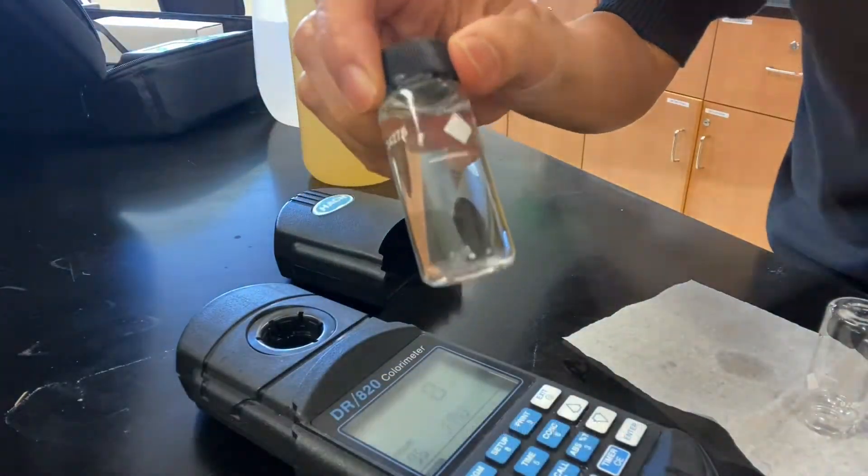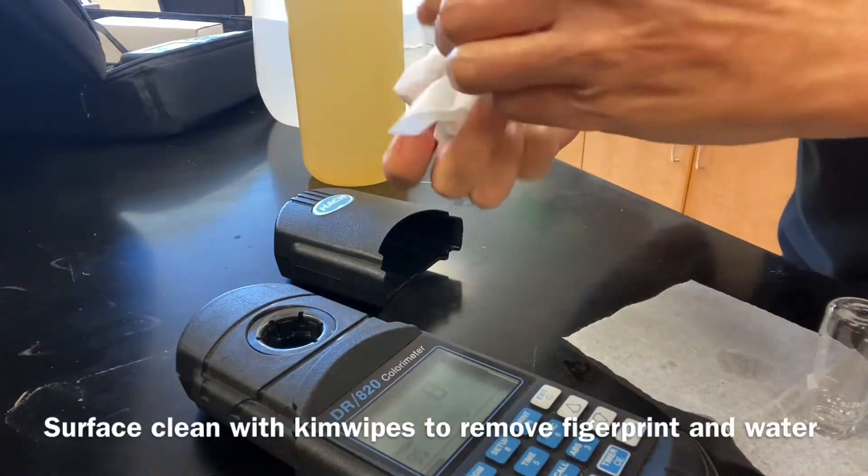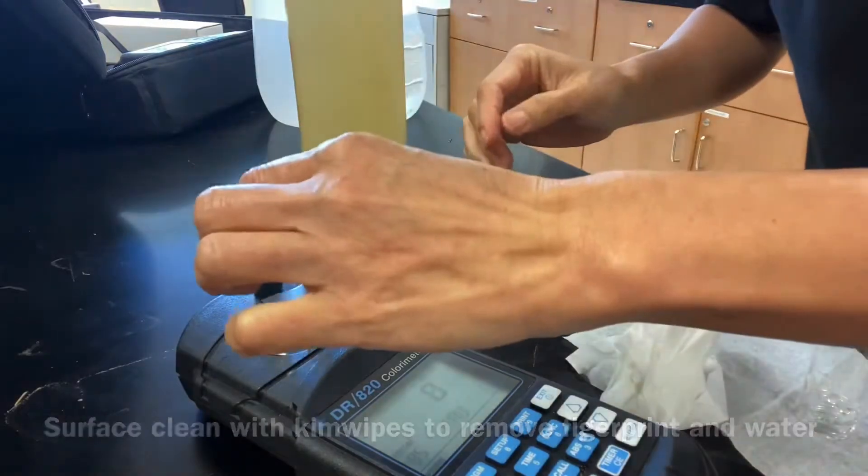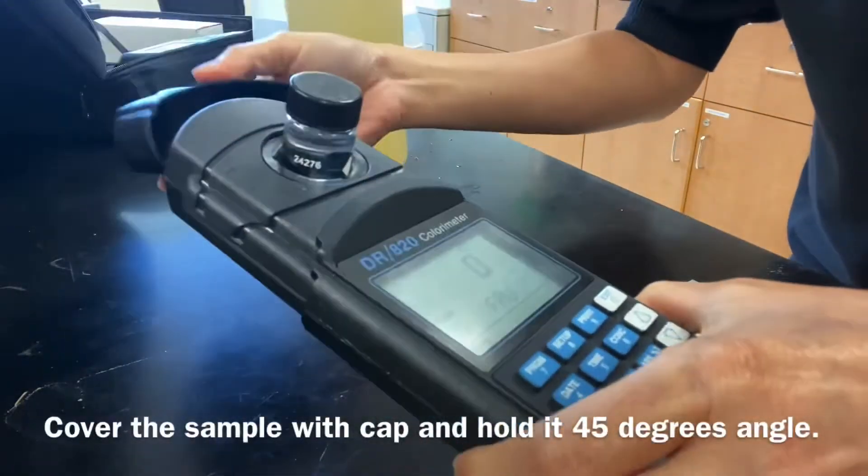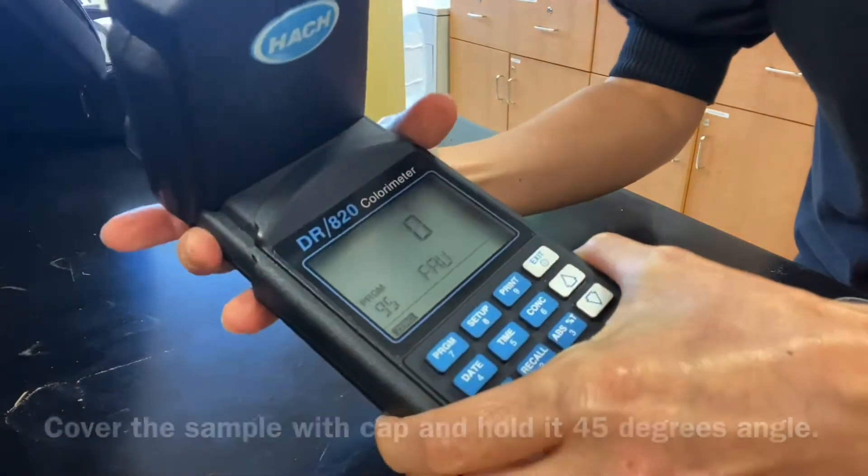The most common one is NTU, Nephelometric Turbidity Units, or FAU, Formazine Attenuation Units. Basically, 1 NTU equals 1 FAU.